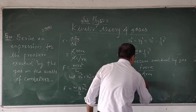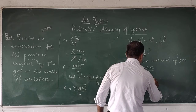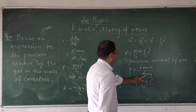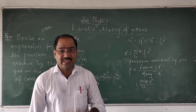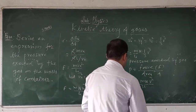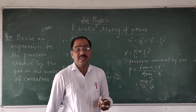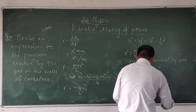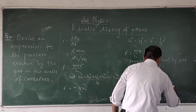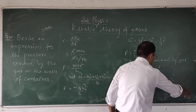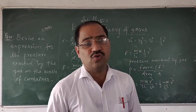Therefore, force equals M upon L into V squared, divided by the area. The area here equals L squared, capital L squared. Therefore, L into L squared becomes L cubed in the next step. That is, one-third times M into N divided by L cubed, into V squared. In the next step, L cubed is equal to the volume V.